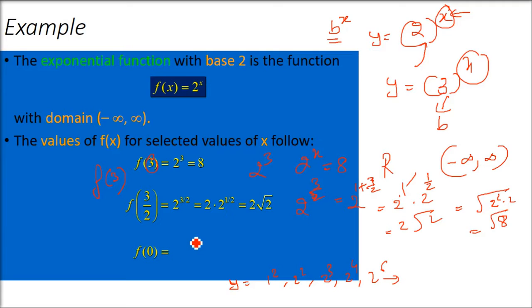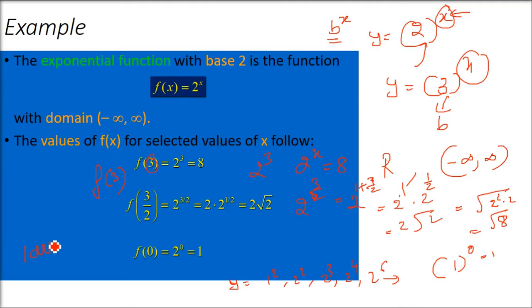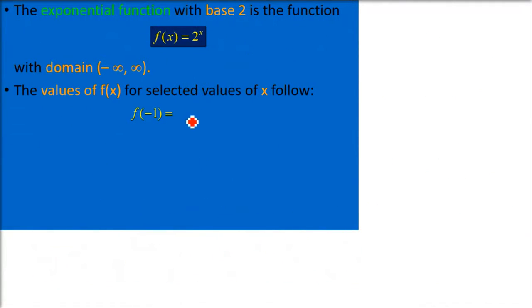Now take f(0). Anything to the power 0 is always 1. So f(0) = 1. We have checked multiple values for this function with base 2. You can change the base to any valid value and find corresponding outputs similarly. Remember, anything to the power 0 is always 1.